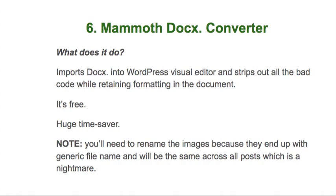Number six is Mammoth Docx Converter — a free plugin I've been using for years. Basically, when you get a Docx from your writer and need to get it into the WordPress Visual Editor, if you copy and paste from the Docx your code is going to be a mess — lots of div tags and other nonsense you don't want. What Mammoth Docx does is strip all that out while retaining the formatting your writer put in, preserving H2 tags, H3 tags, bold, etc. It's a huge time saver, especially if you have other people importing articles in Docx format.